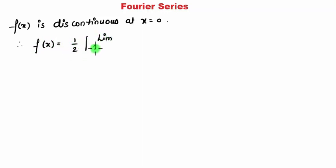as x tends to c minus of f of x plus the limit as x tends to c plus, where this is c minus and this is c plus